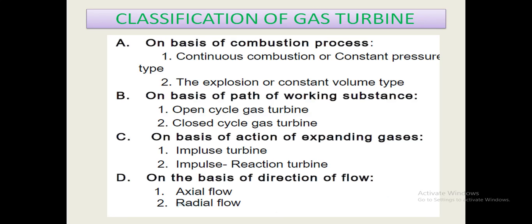Basic classification of gas turbines: on the basis of combustion process, they are classified as continuous combustion or constant pressure type, and explosion or constant volume type. On the basis of path of working substance, they are classified as open cycle and closed cycle gas turbine. There are also impulse turbine and impulse reaction turbines. On the basis of direction of flow, they are classified as axial flow and radial flow. Open cycle and closed cycle gas turbines will be discussed in this video lecture.